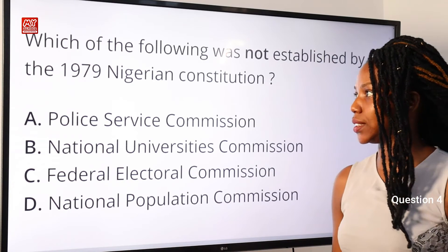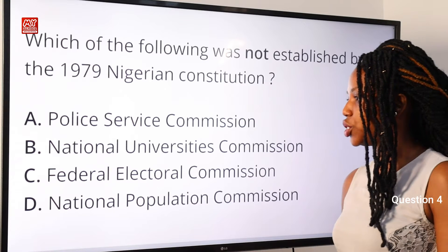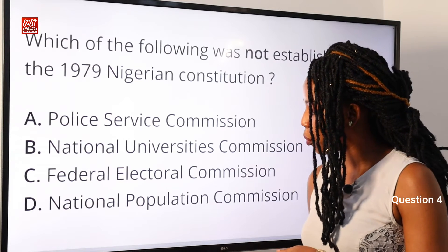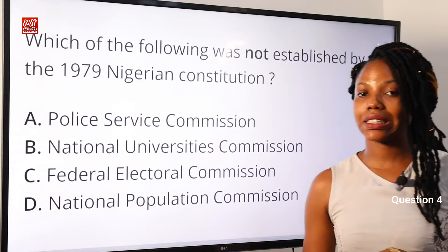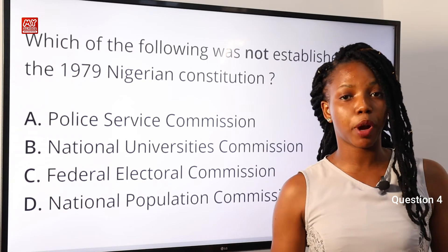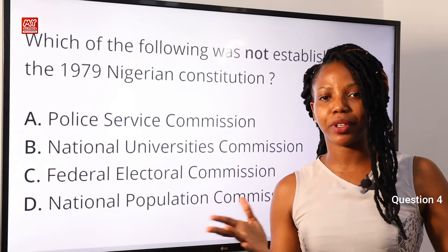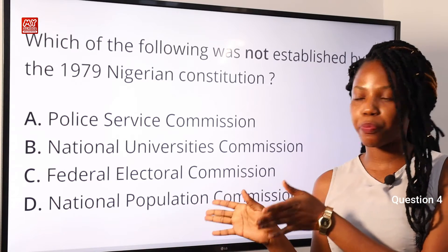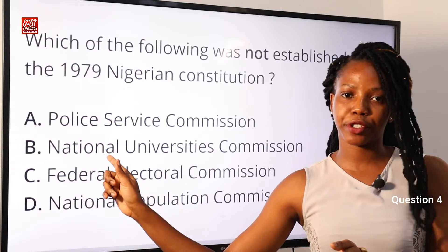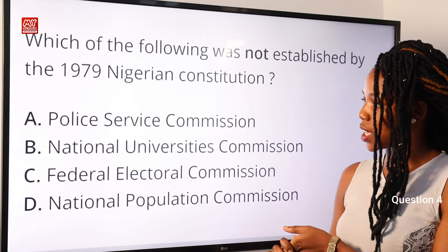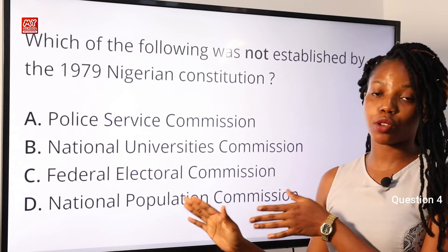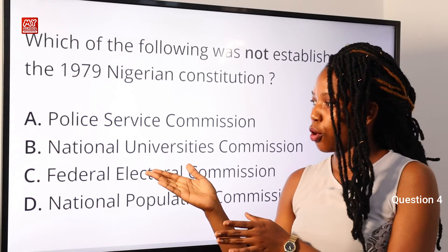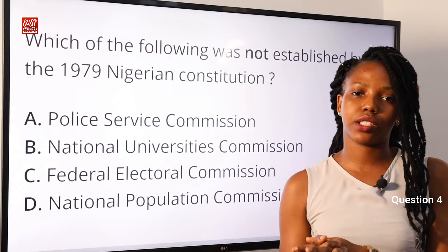Question 4: Which of the following was NOT established by the 1979 Nigerian constitution? A: Police Service Commission; B: National Universities Commission; C: Federal Electoral Commission; D: National Population Commission. The 1979 constitution ushered in the second republic with the American-style presidential system. All the listed commissions were established except option B — the National Universities Commission. Option B is the correct answer.